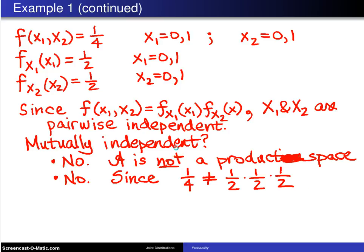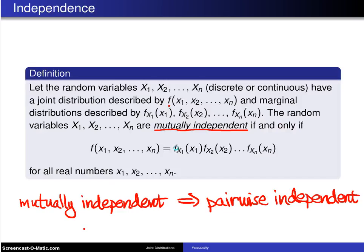So here is a case where you have random variables that are pairwise independent but are not mutually independent, and that is what gave us the notion from several slides back that mutually independent implies pairwise independent, but pairwise independent does not imply mutually independent.